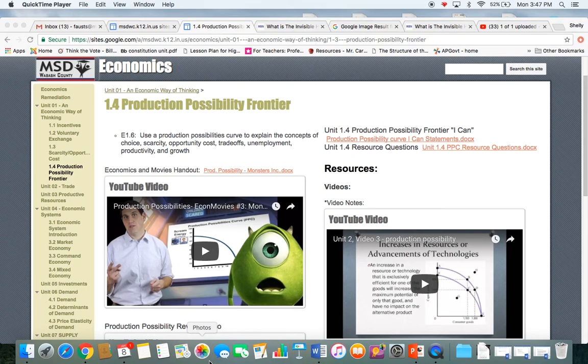1.4 is about production possibility frontier. You'll also see that called production possibility curves.